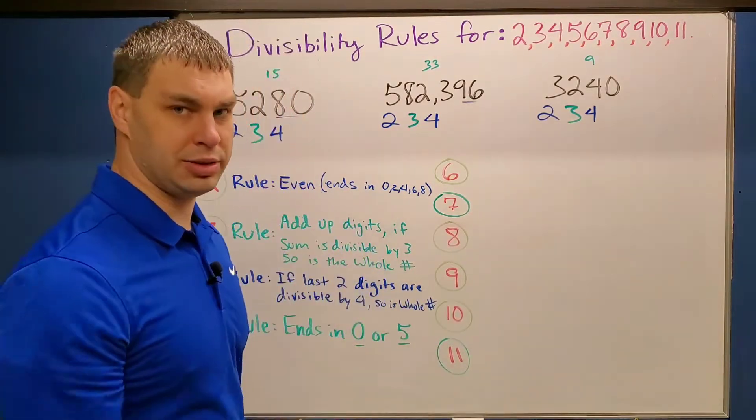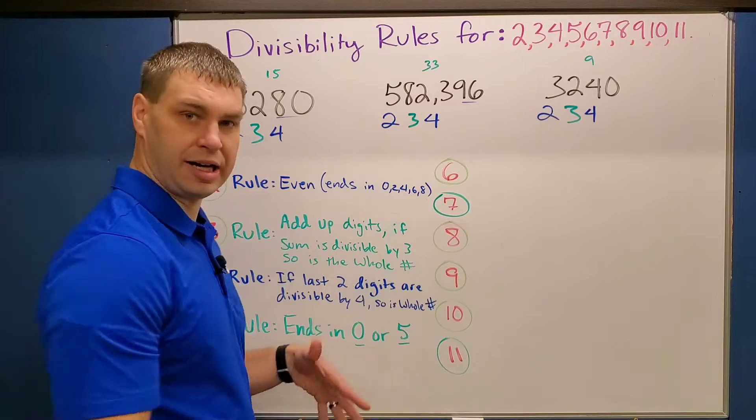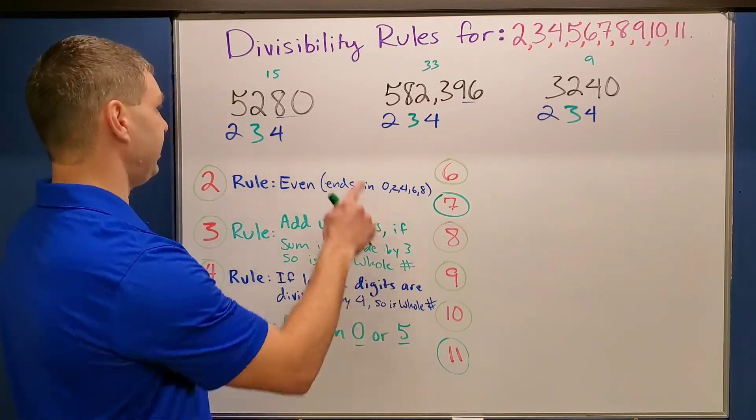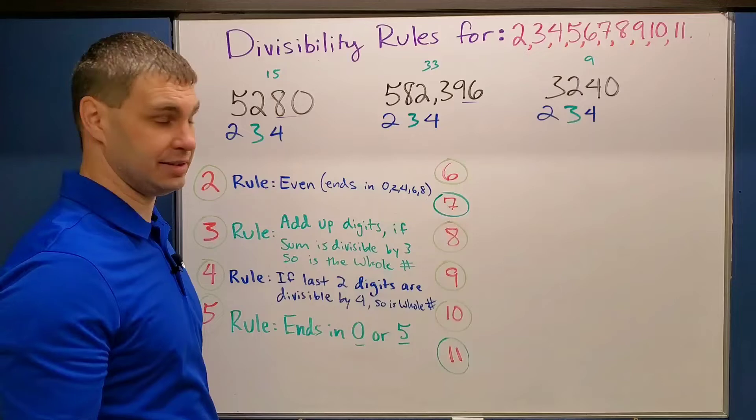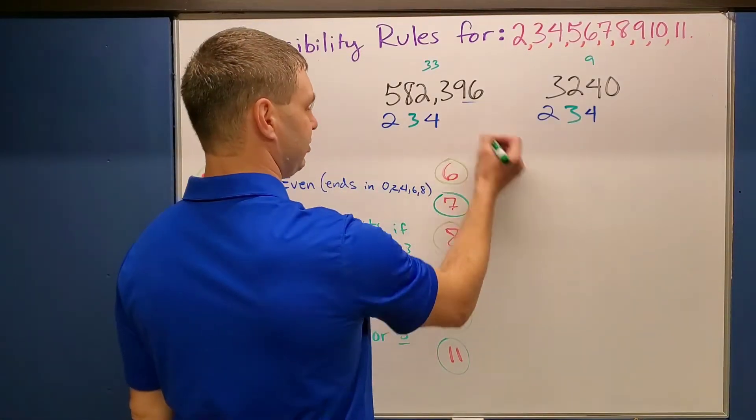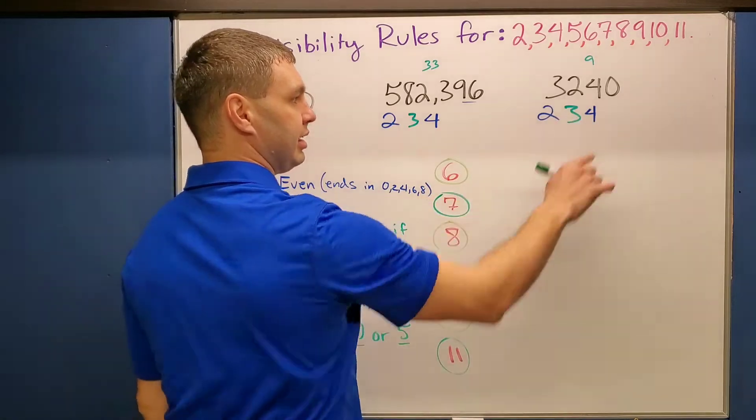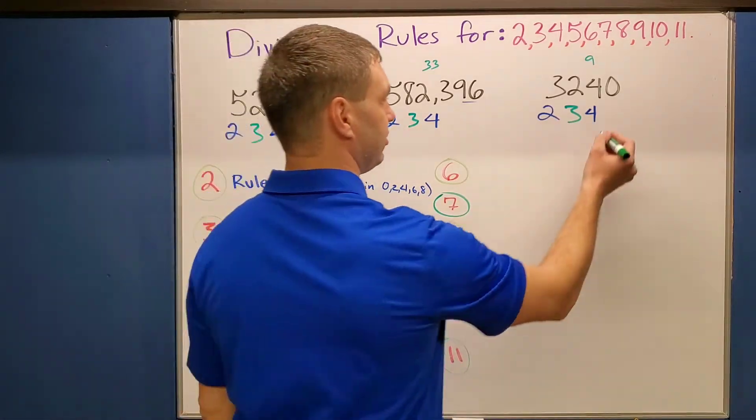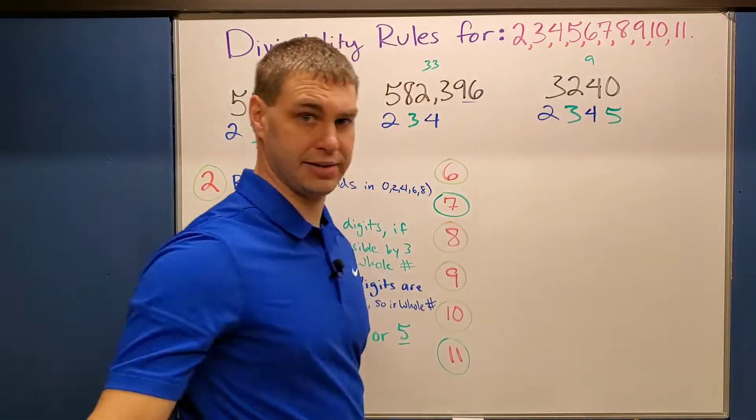This next one, five, is one that we probably know. If it ends in a zero or a five, it is divisible by five. So here, our first number, 5,280, ends in a zero, so therefore, this one is divisible by five. This one ends in a six. This one does not work for five, but this one ends in a zero for our last number, so this one is divisible by five.